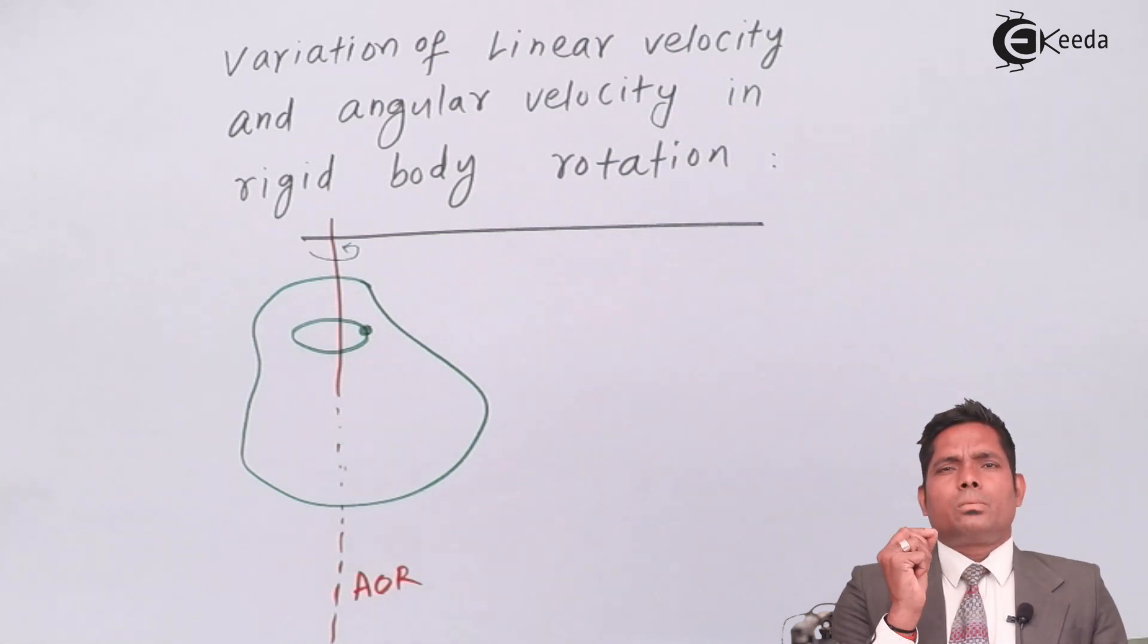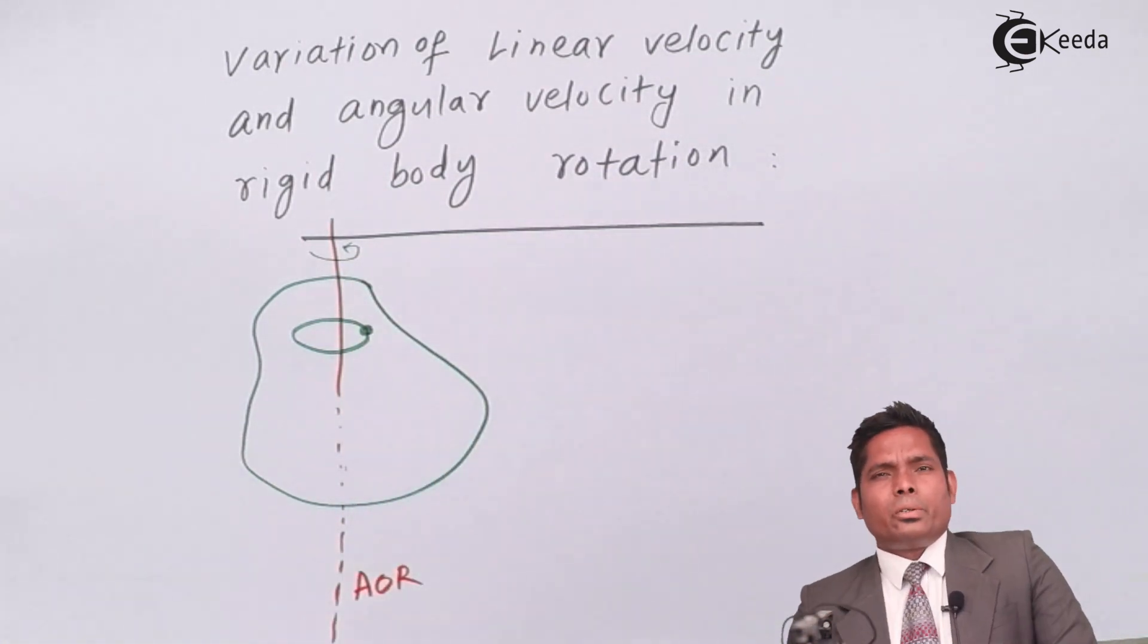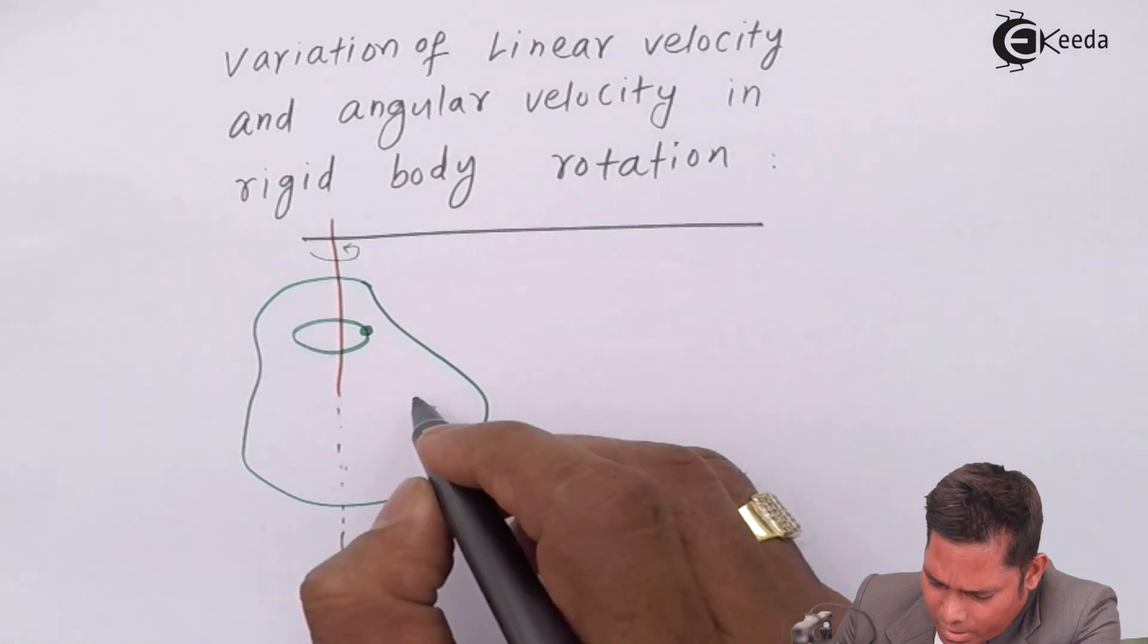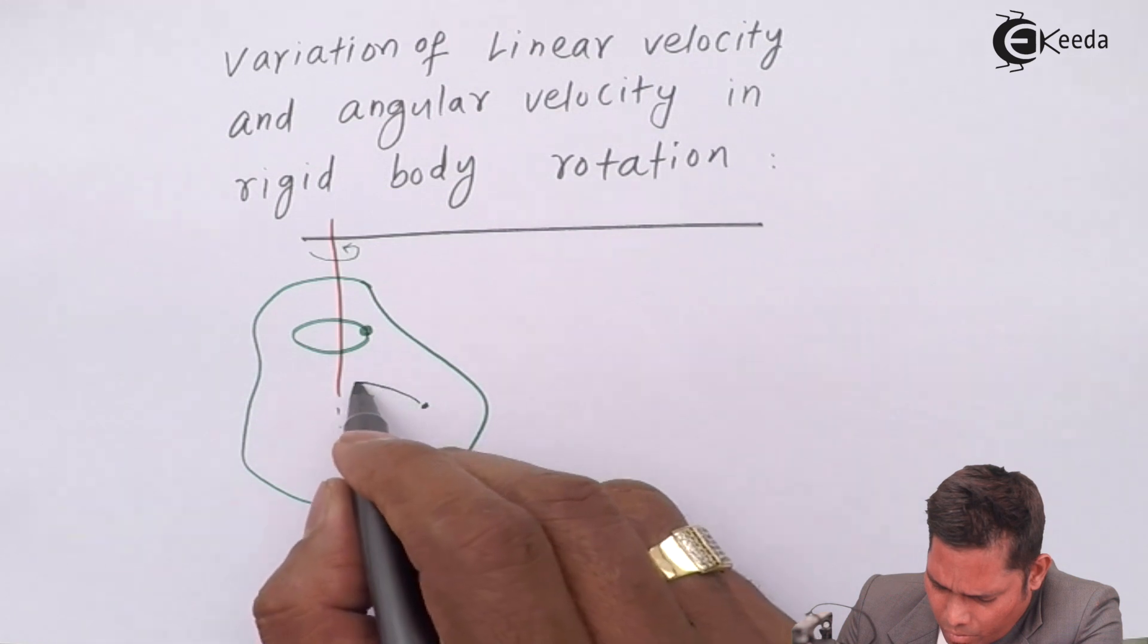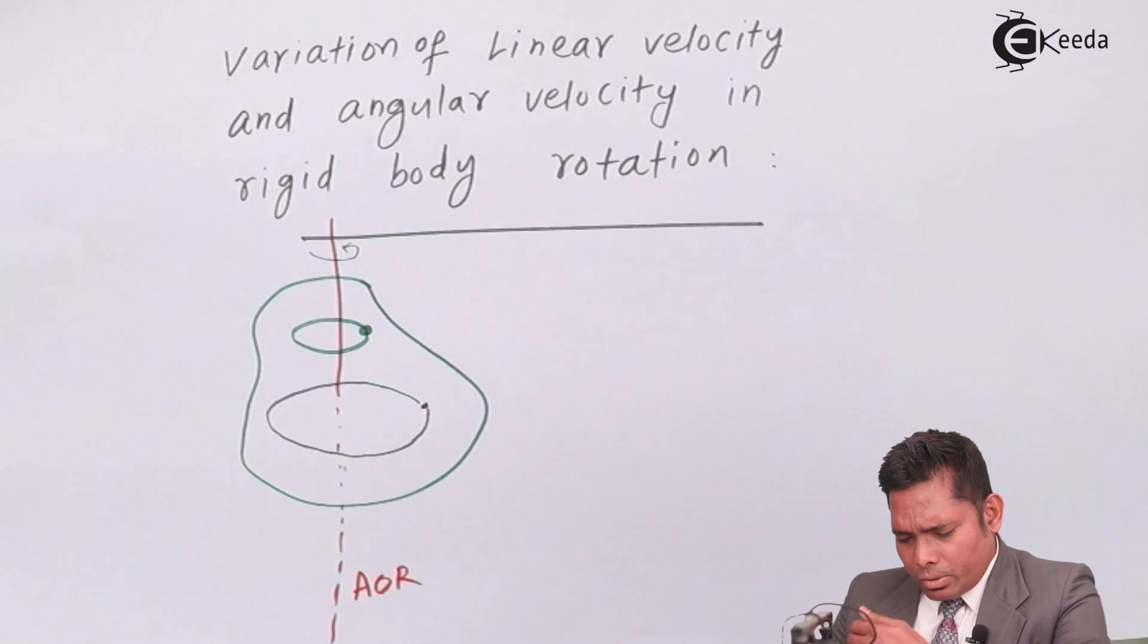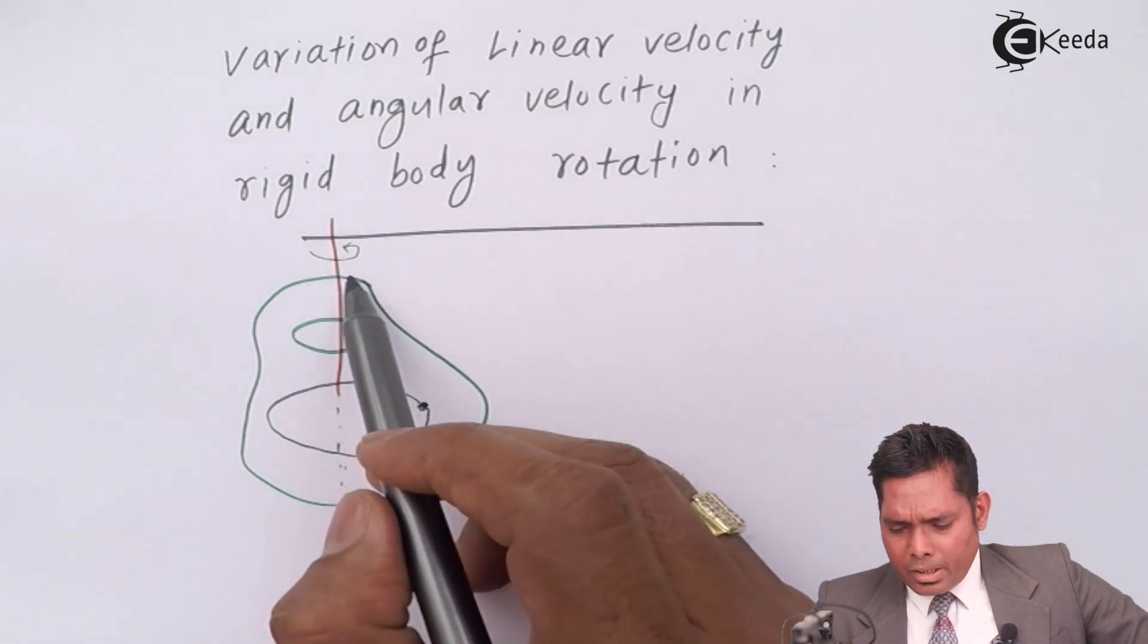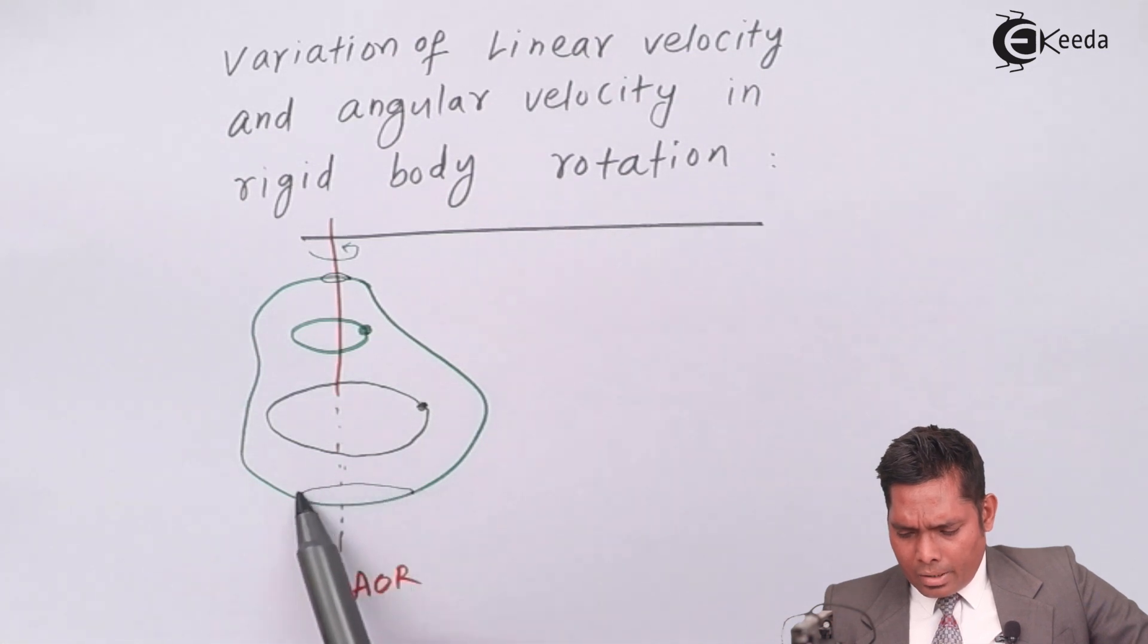Though the shape of the object is not circular, but during its rotation, every point will make a circular motion. If I talk about a point over here, this point will also move in a circular path. So as you see, each and every point will have circular motion.